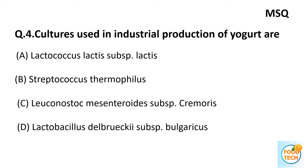Question 4: The cultures used in industrial production of yogurt are: A. Lactococcus lactis subsp. lactis, B. Streptococcus thermophilus, C. Leuconostoc subsp., D. Lactobacillus bulgaricus. It is a multi-select question with two answers: B — Streptococcus thermophilus, and D — Lactobacillus bulgaricus.